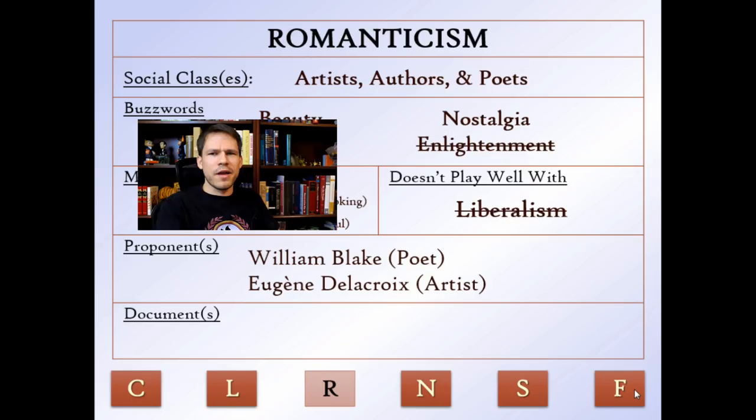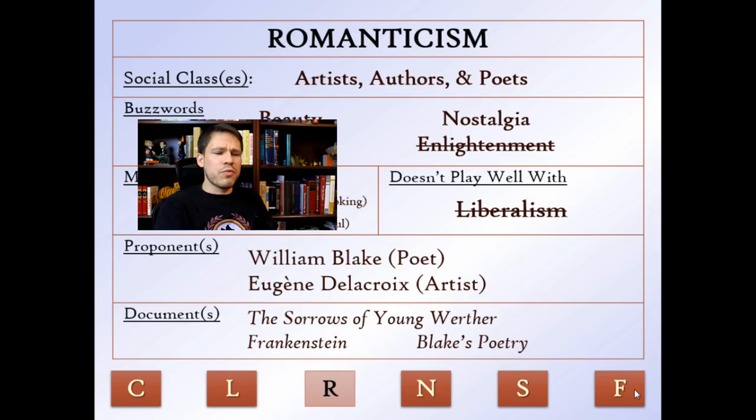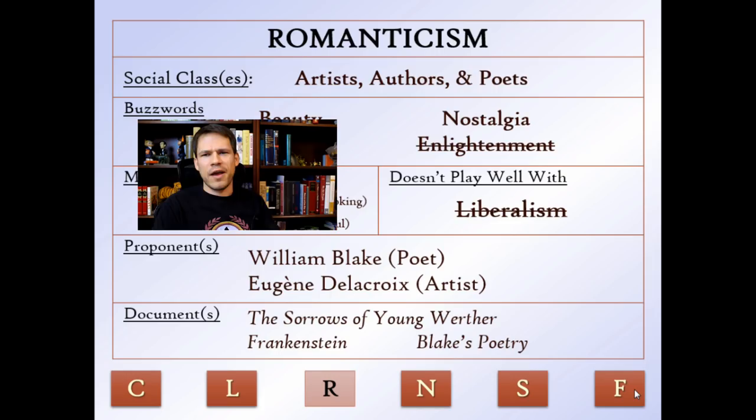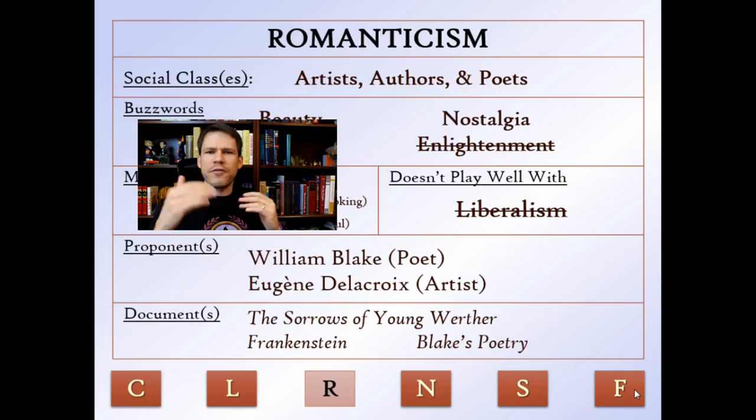Key Romantic documents include The Sorrows of Young Werther, about a young man so deeply in love with an unavailable woman that he shoots himself — a very emotionally-driven story. Frankenstein is another example: when you look at the Enlightenment's belief that science can fix everything, Dr. Frankenstein wants to play God — science gone wrong. And William Blake's poetry, especially when he talks about the dark satanic mills of the Industrial Revolution.